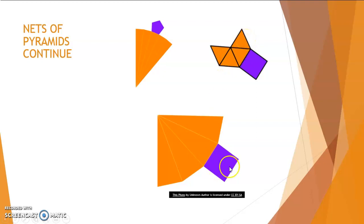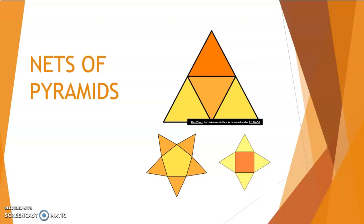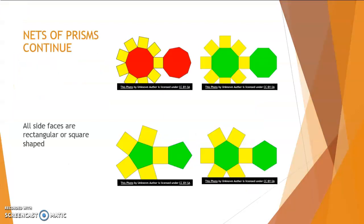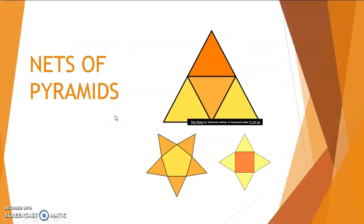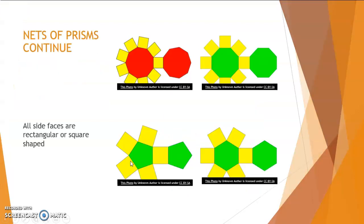And here's a different one as well. So let's recap, how do I distinguish between the nets of prisms and pyramids? Prisms have rectangular or square side faces and pyramids have triangular side faces. Remember, we look at the base face to name it and then whether it has triangles for pyramids or rectangles or squares for prisms.